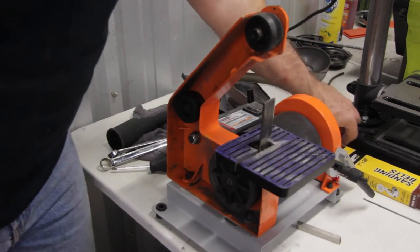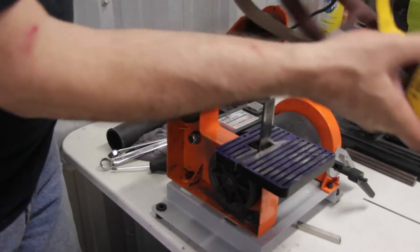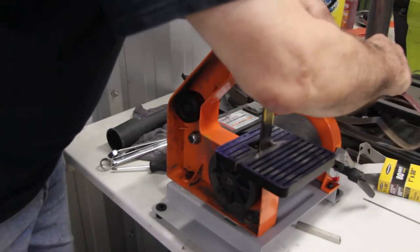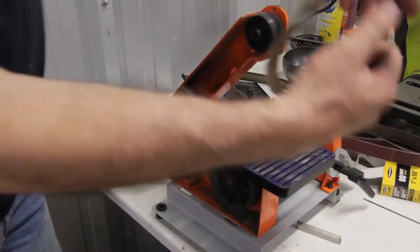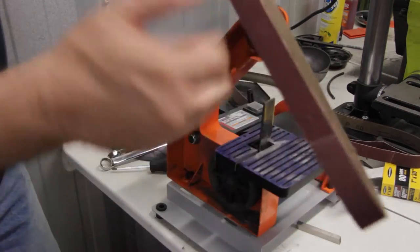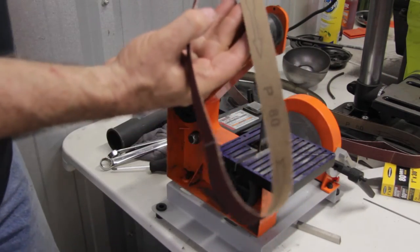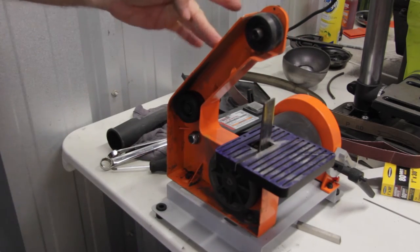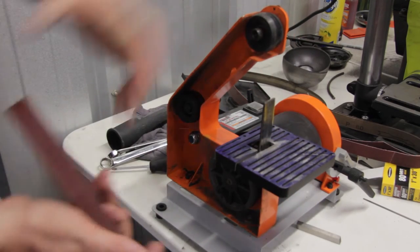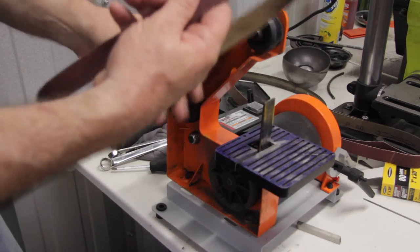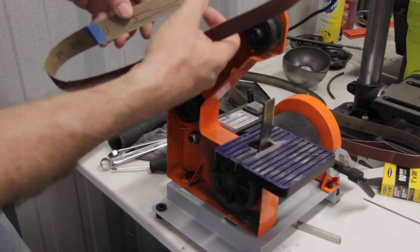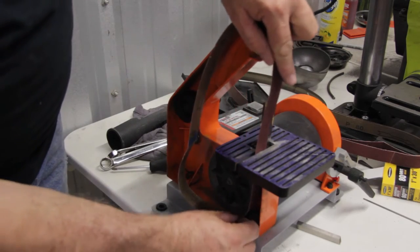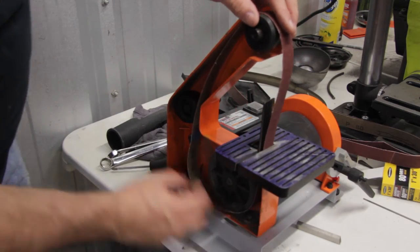We start out by feeding the belt through the table. But one thing I want to remind you of is there is an arrow on the belt and there's also an arrow on the back of the belt sander. You want to make sure the arrows are both going in the same direction. So we'll feed the belt through the table and then on to the two front rollers.